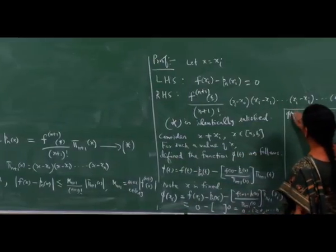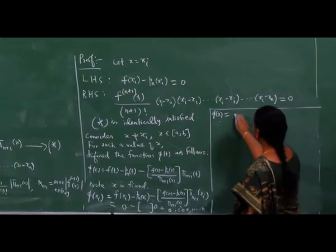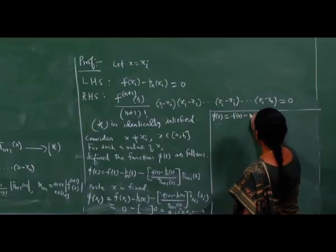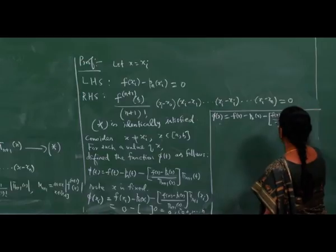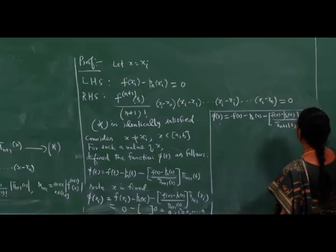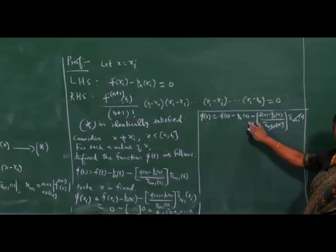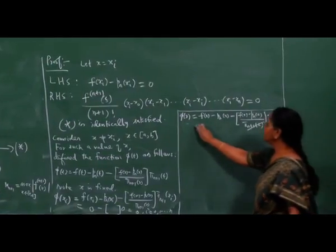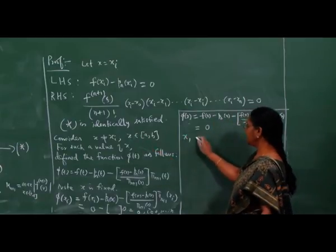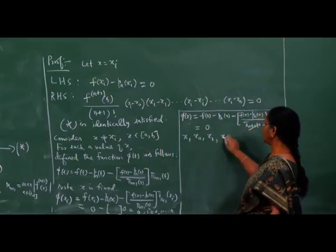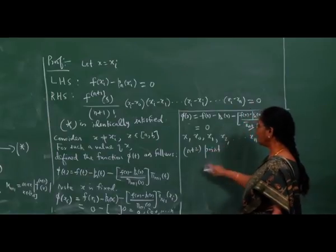In addition, φ(x) = f(x) - p_n(x) - [f(x) - p_n(x)] / π_{n+1}(x) · π_{n+1}(x), which simplifies to f(x) - p_n(x) - [f(x) - p_n(x)] = 0. So φ vanishes at the points x, x₀, x₁, x₂, ..., x_n, giving n+2 points at which φ vanishes.